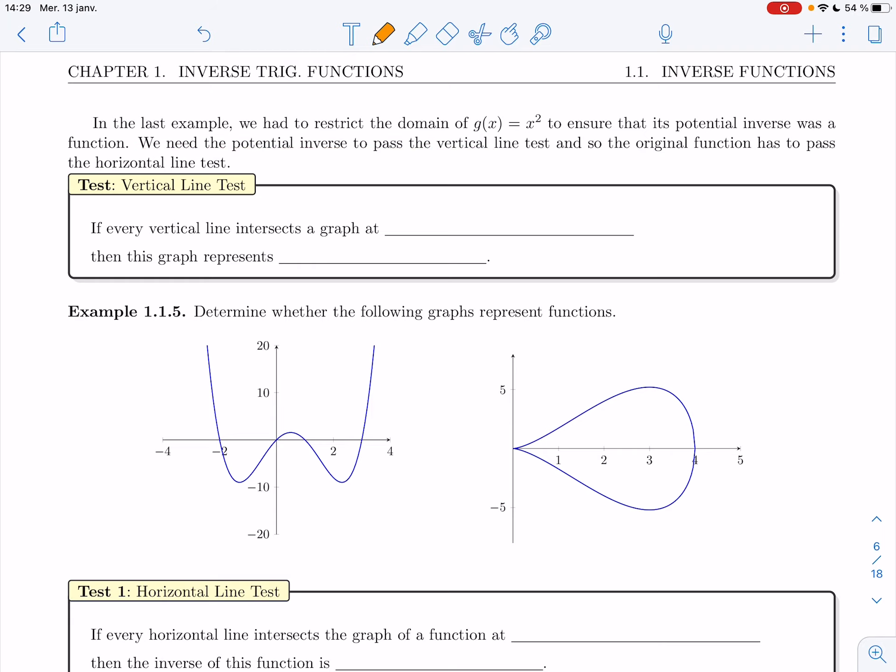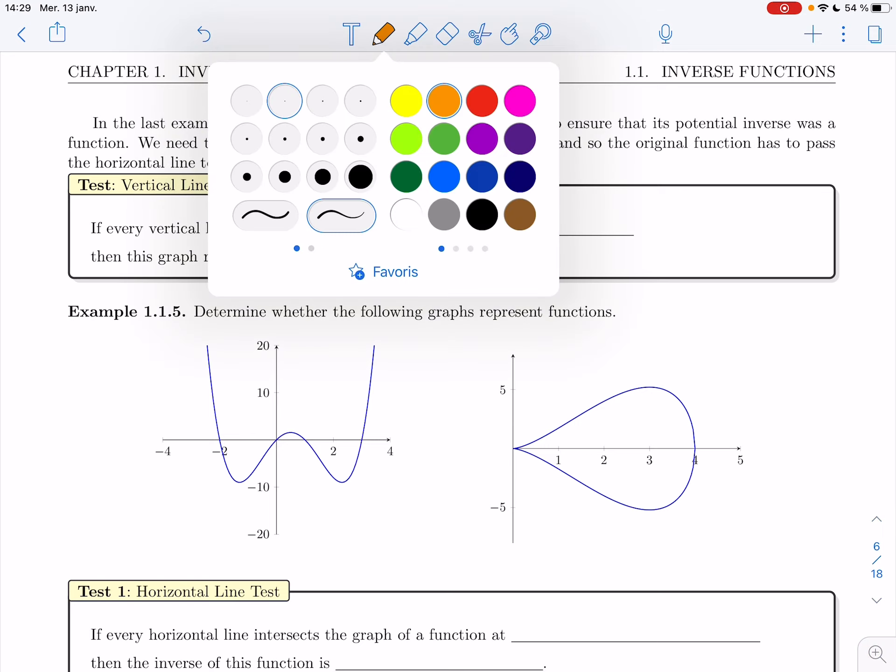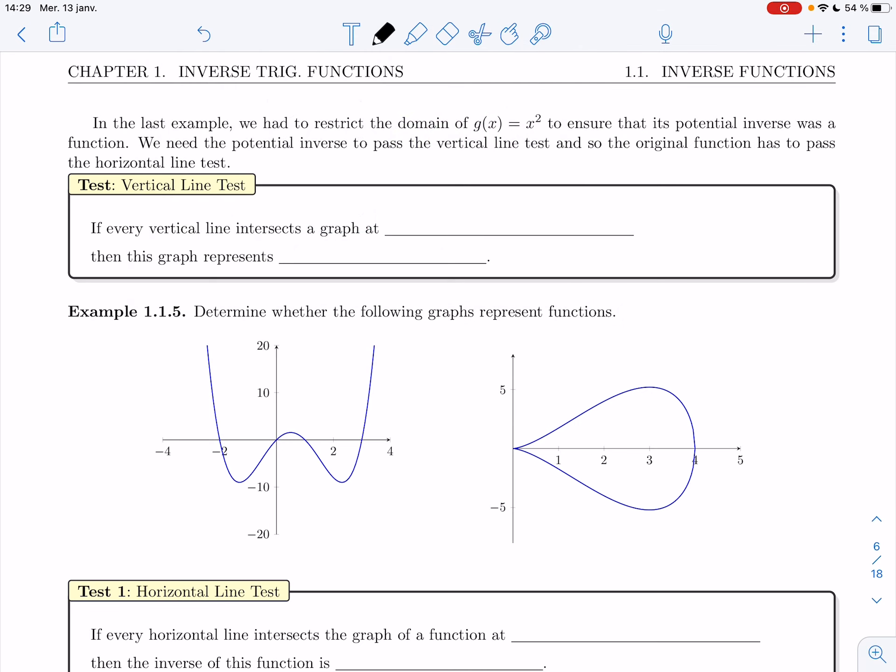So I just want to quickly go through these two tests and show you a couple of examples for those of you who haven't seen them before. If every vertical line intersects a graph at one point, so that one point would give you the value of the function, or no points, that would mean the x value is not part of the domain, then this graph represents a function.